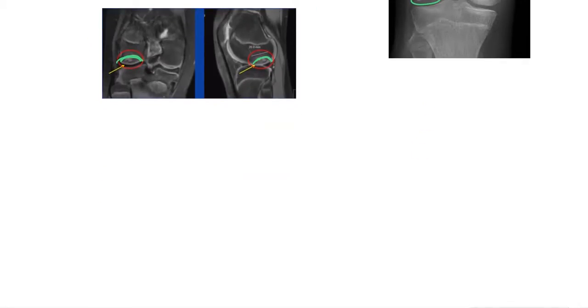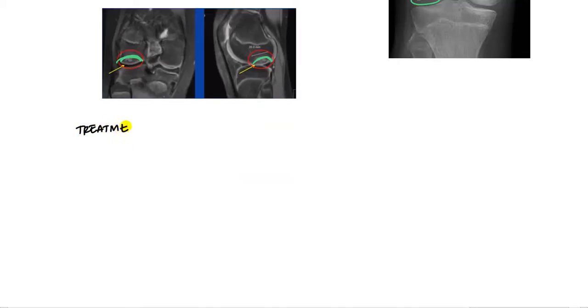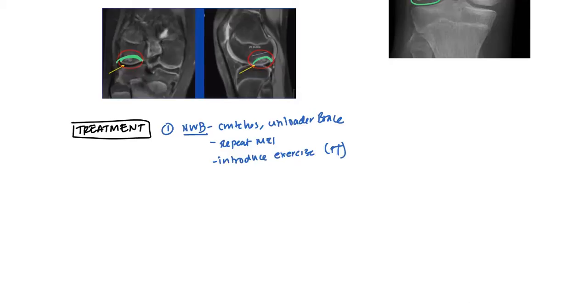How would you treat it? First line treatment is non-surgical. You want no weight bearing - this can be done with crutches or an unloader brace. Do this for a few weeks, see if the pain goes away, then do repeat MRIs and x-rays. Slowly introduce exercise through physiotherapy. Usually after a while it will improve.